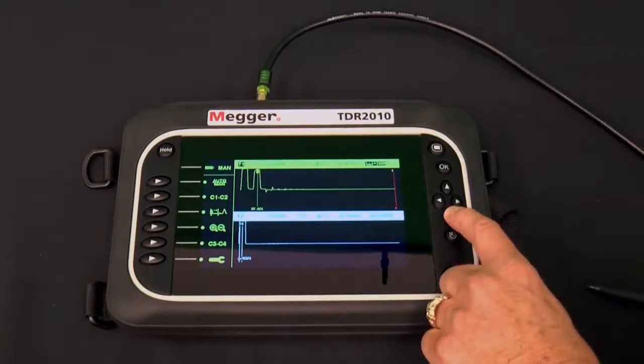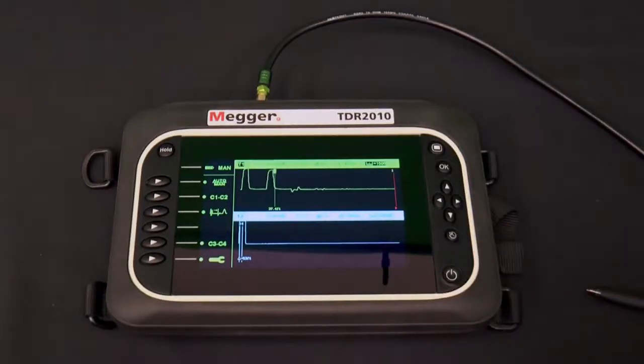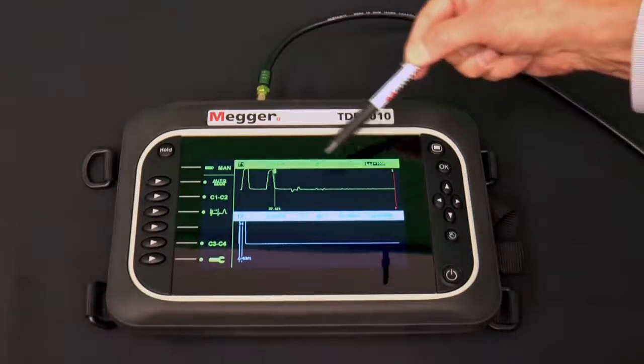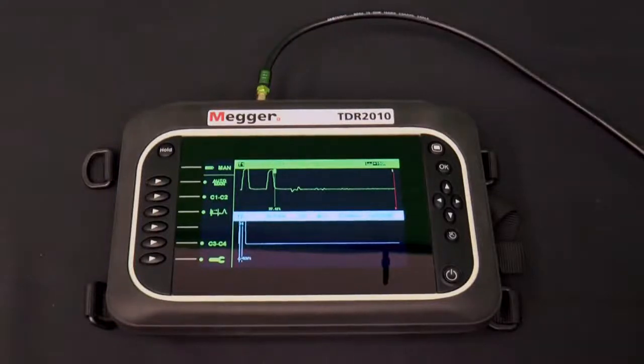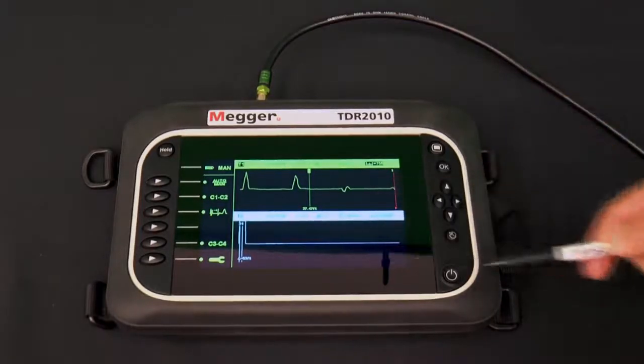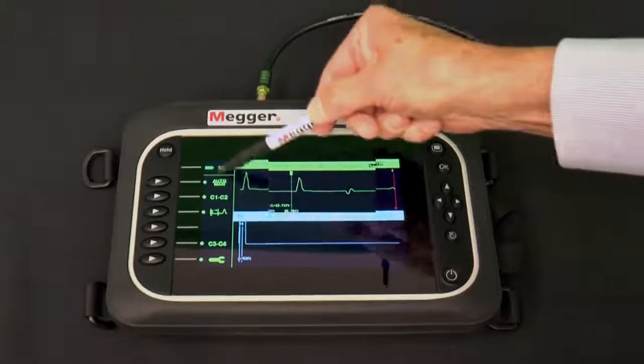In other words, we are not in setup now, so we can't move among the other variables shown across the top that we changed in the setup screen. Let's analyze some traces. In this case, we have two traces and we are in automatic mode. MAN is displayed at the top left.